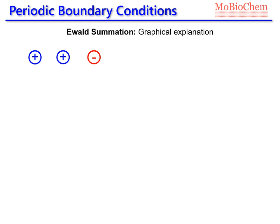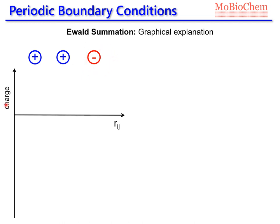Let's assume we have these three ions in our system: two cations and one negative charge. Now, we are going to represent the charge of our system with respect to the position of these ions. If we are using a point charge force field, as is usually the case, we will have a positive point charge at this position, another positive point charge at this position, and a negative point charge here. We are still working in the real space. Later we will see that we need to work a bit in the reciprocal space.